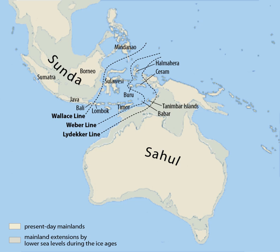Researchers disagree on the spatial extent of savanna that was present in Sundaland. There are two opposing theories about the vegetation of Sundaland during the last glacial period: one that there was a continuous savanna corridor connecting modern mainland Asia to the islands of Java and Borneo, and two that the vegetation was instead dominated by tropical rainforest, with only small, discontinuous patches of savanna. A savanna corridor—even if fragmented—would have allowed savanna-dwelling fauna as well as early humans to disperse between Sundaland and the Indo-Chinese biogeographic region. Morley, Flenley and Heaney were the first to postulate the existence of a continuous corridor of savanna vegetation through the centre of Sundaland from the modern Malaysian Peninsula to Borneo during the last glacial period, based on palynological evidence.